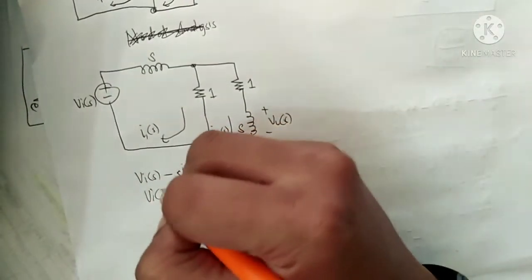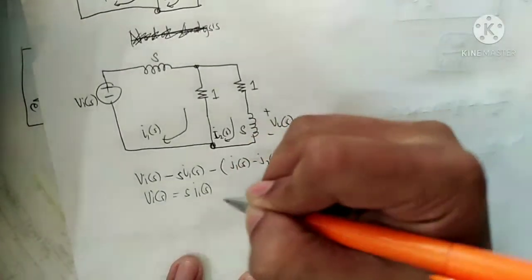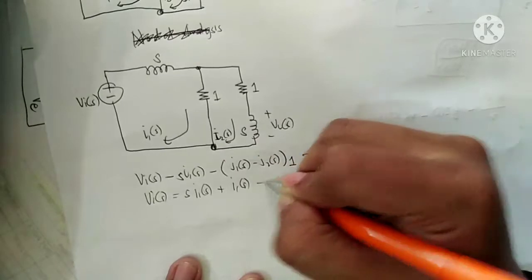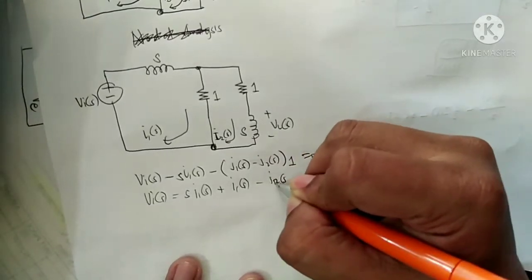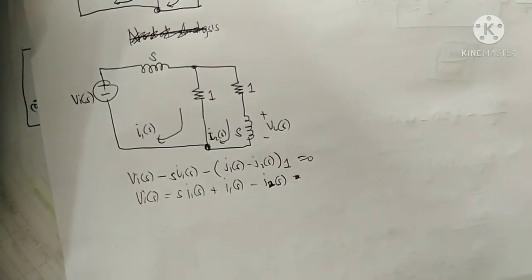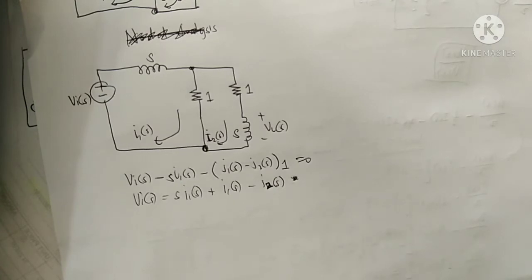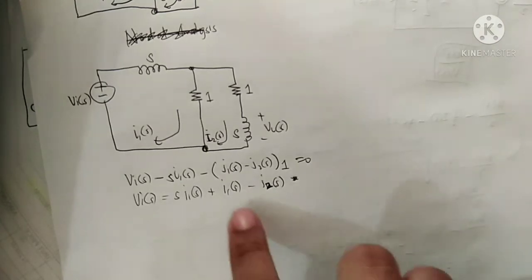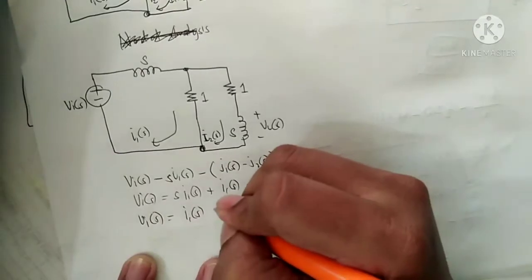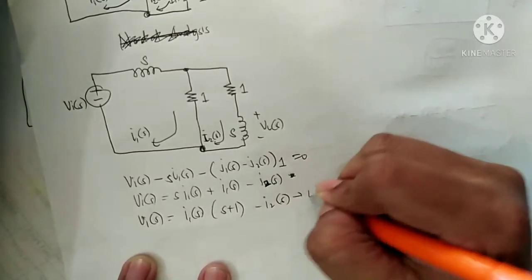Expanding: Vi(S) equals S·I1(S) plus (I1(S) minus I2(S)) equals 1. Factoring out I1(S): this gives I1(S) times (S + 1) minus I2(S). So this is Equation 1: Vi(S) = I1(S)(S + 1) − I2(S).